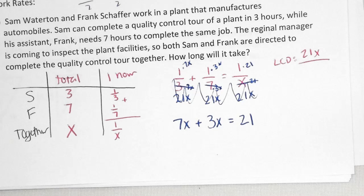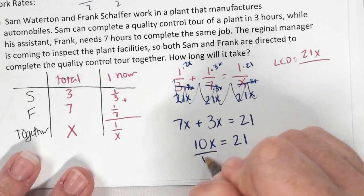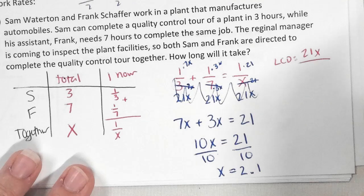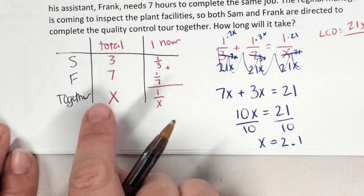So knowing that, what's one times seven X? Seven X. Plus one times three X? Three X. And then one times 21. 21. Now can we solve it? So what's seven X plus three X? Ten X. Divide both sides by ten and I get X equals 2.1.